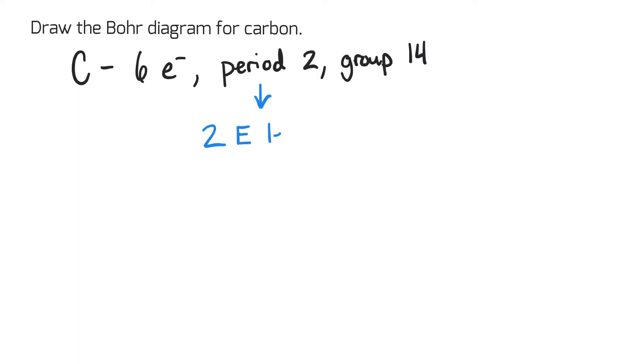Period 2 tells me that there's going to be 2 energy levels or electron shells. Group 14 tells me that there's going to be 4 valence or outer electrons. So I begin by writing my symbol, carbon, C is represented.